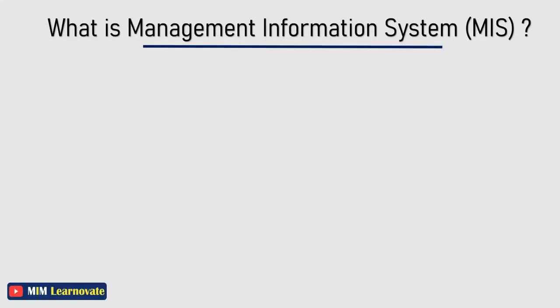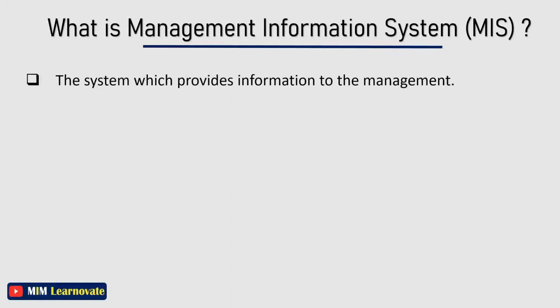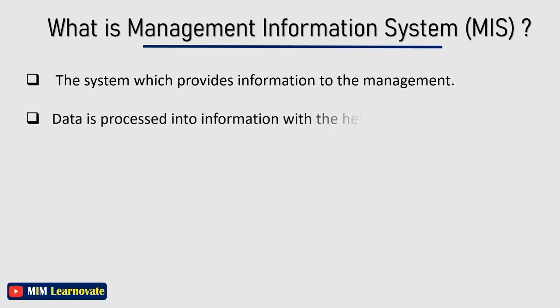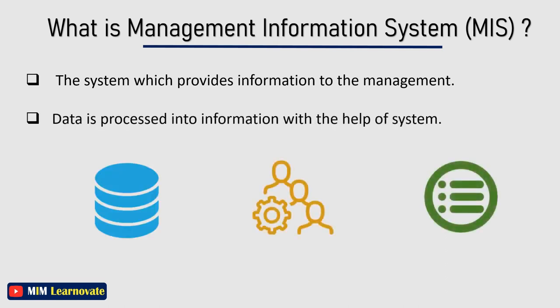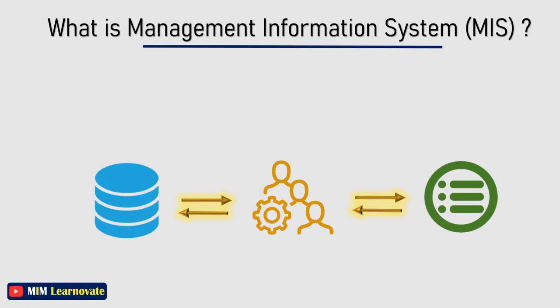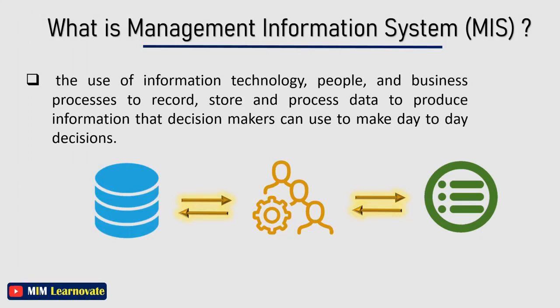What is management information system? The system which provides information to the management is called management information system. Data is processed into information with the help of a system. MIS is the use of information technology, people and business processes to record, store and process data to produce information that decision makers can use to make day-to-day decisions.